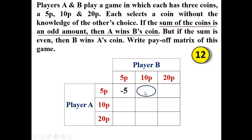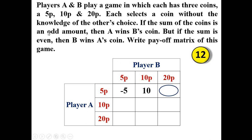Now consider player A having 5 paise and player B having 20 paise. The sum is 5 + 20 = 25 paise, which is again an odd amount. Since the sum is odd, A wins B's coin. B's coin is 20 paise, so the value is plus 20.